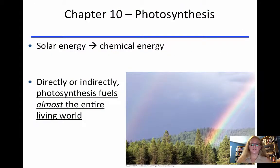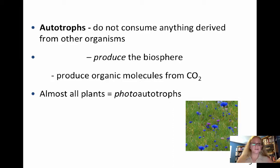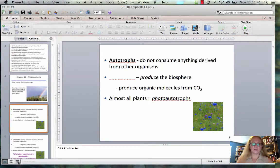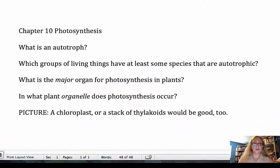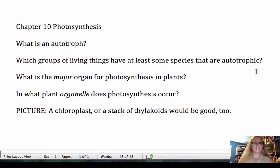So, chapter 10 — photosynthesis. Solar energy, which is light energy, gets transformed in photosynthesis into the chemical energy present in the bonds of sugar molecules. We have some information about autotrophs — that word is bold, which seems like it could be really important. So if autotrophs are important, maybe we could write a question about that. You'd want to have a Word document open, and you might write something like: What is an autotroph?